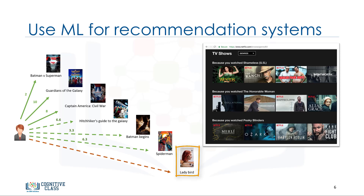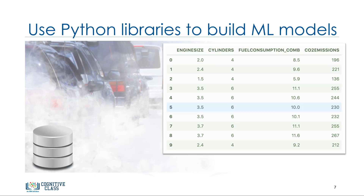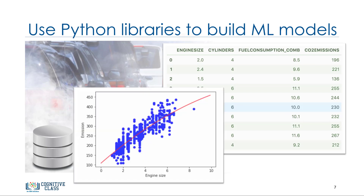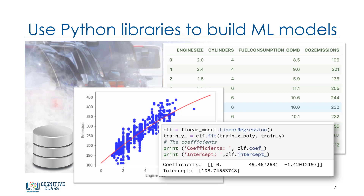There is so much that you can do with machine learning. Here you'll learn how to use popular Python libraries to build your model. For example, given an automobile data set, we can use the scikit-learn library to estimate the CO2 emission of cars using their engine size or cylinders. We can even predict what the CO2 emissions will be for a car that hasn't even been produced yet.